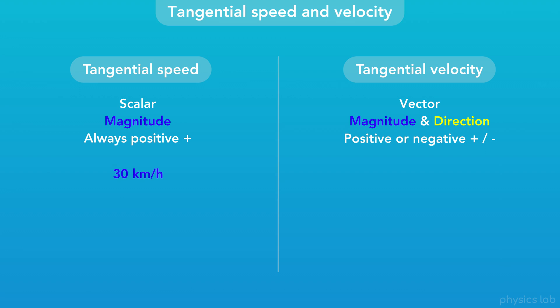If a car's speed is 30 kilometers per hour, the velocity needs a direction. For circular motion, that can only be 30 kilometers per hour counterclockwise or clockwise.